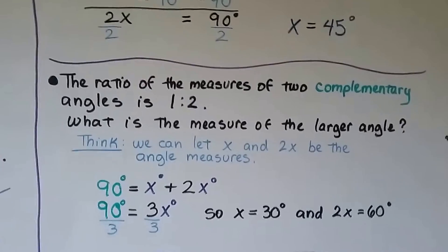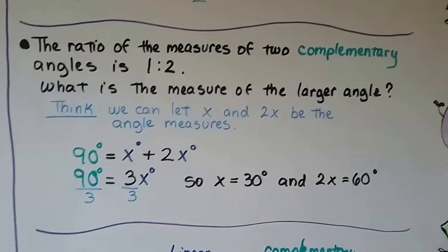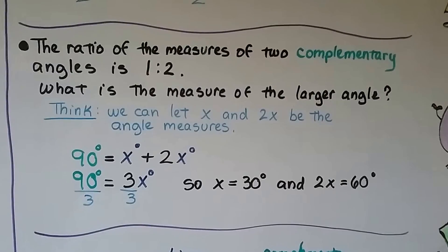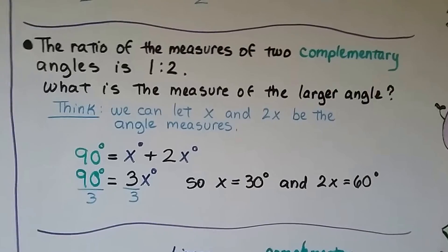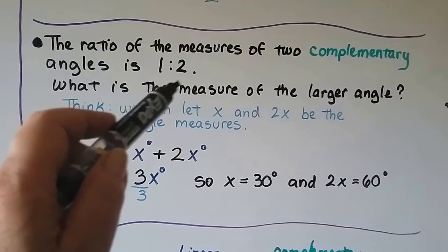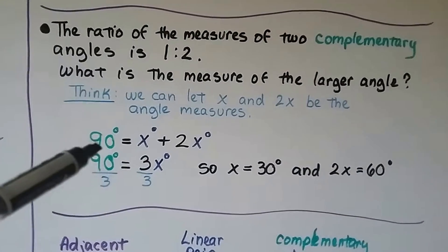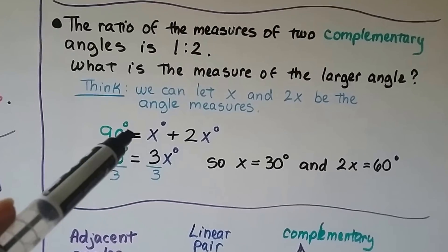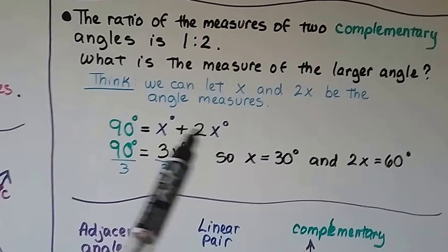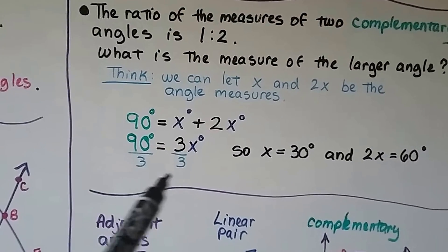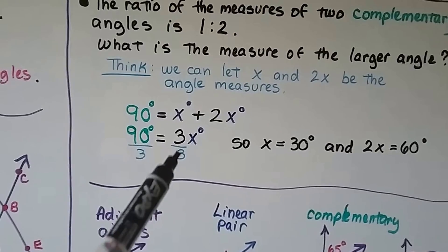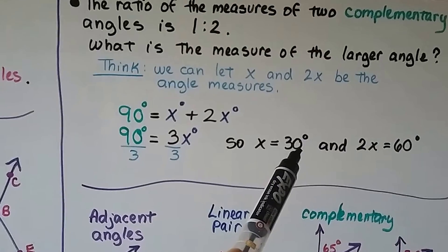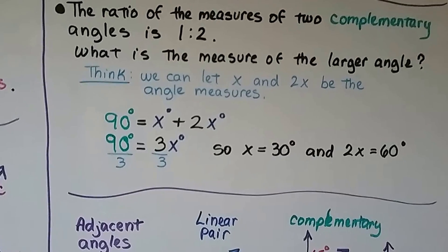The ratio of the measures of two complementary angles is 1 to 2. What is the measure of the larger angle? Let the angle measures be X and 2X. Since they're complementary, X plus 2X equals 90 degrees. Combining like terms: 3X equals 90. Dividing by 3: X equals 30 degrees. So 2X equals 60 degrees — that's the larger angle.